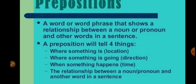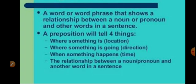Second, where something is going — means direction. Prepositions indicate करती हैं कि जो भी चीज़ के बारे में हम जानना चाहते हैं वो कहाँ जा रही है. Third, when something happens — means time बताना कि किस समय हो रहा है, हुआ, या होगा. And fourth, the relationship between a noun, pronoun and another word in a sentence.